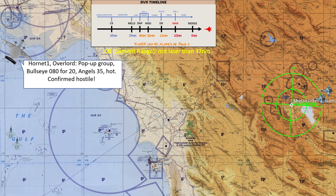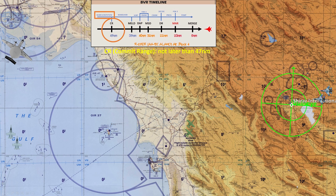First, we need to extract the info and build our situational awareness picture. There's a hostile group, 20 miles from bullseye, on a 080 bearing from it, flying at 35,000 feet in our direction. The first step in the timeline tells us to identify and locate the enemy.